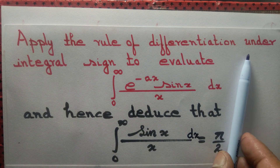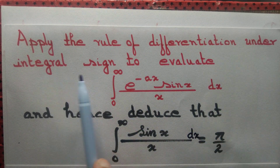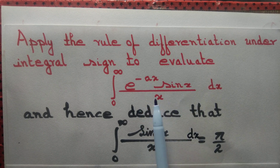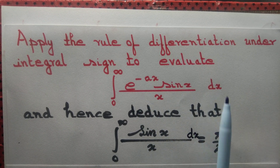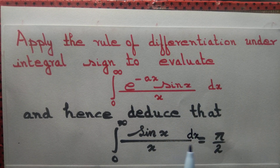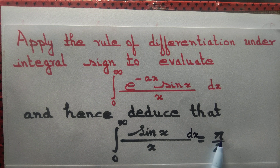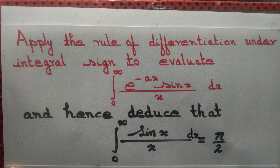Let us apply the rule of differentiation under the integral sign to evaluate ∫₀^∞ e^(ax) sin(x)/x dx, and then deduce that ∫₀^∞ sin(x)/x dx equals π/2.